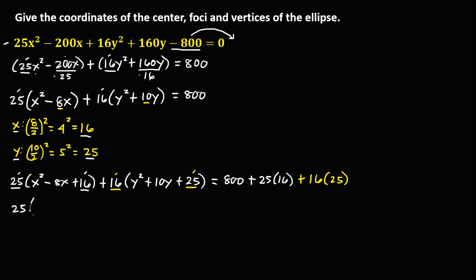Factoring the x group: 25 times (x minus 4)², since x² factors as x times x, the sign is negative, and 16 factors as 4 times 4, giving (x minus 4). For the y group: plus 16 times (y plus 5)², since y² factors as y times y, the sign is positive, and 25 factors as 5 times 5, giving (y plus 5)².